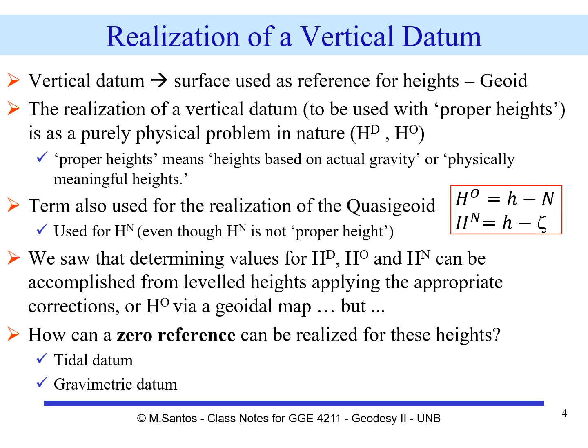What is a vertical datum? A vertical datum is a surface used as reference for heights — this is the geoid. How do we realize a vertical datum? Ideally, we want to use proper heights. This is a purely physical problem in nature.